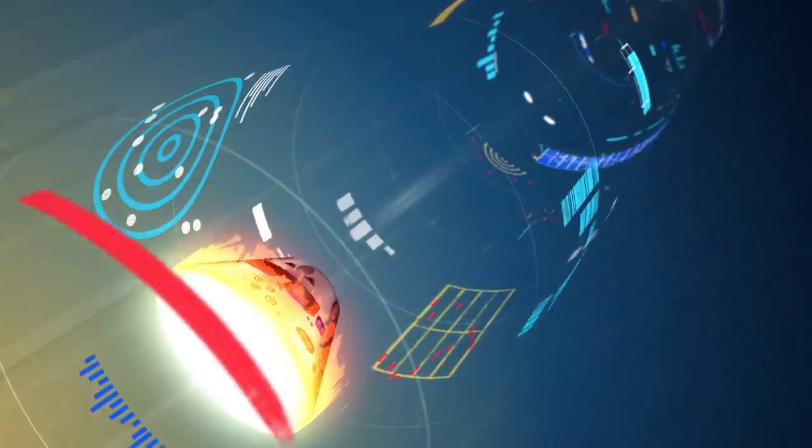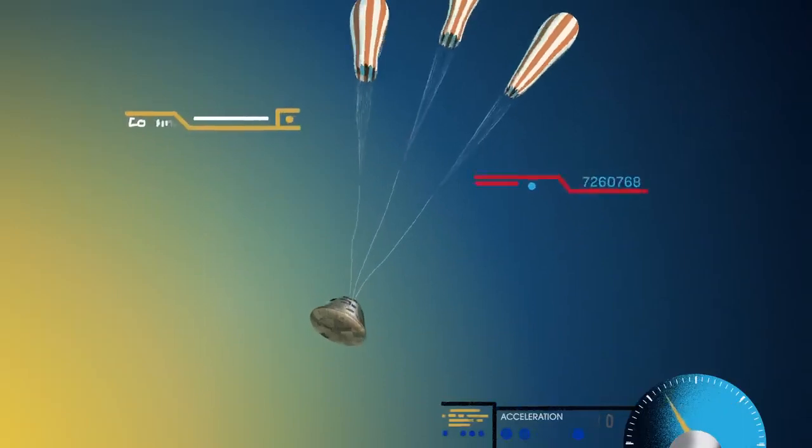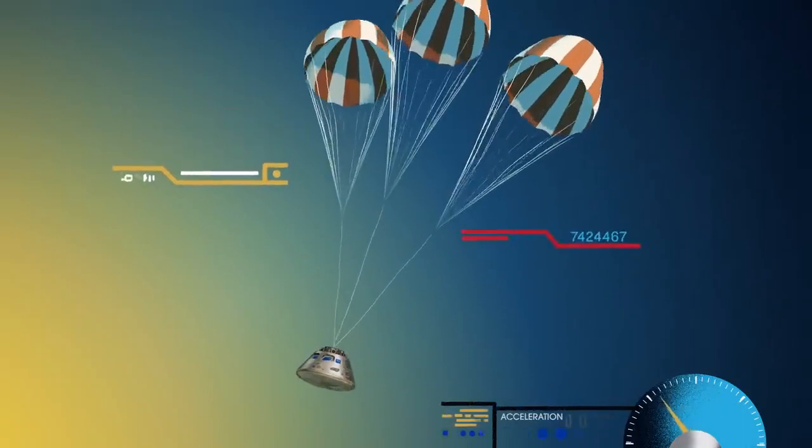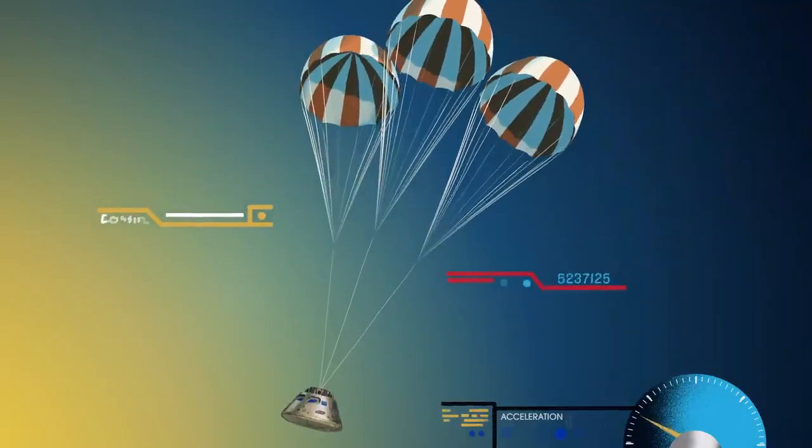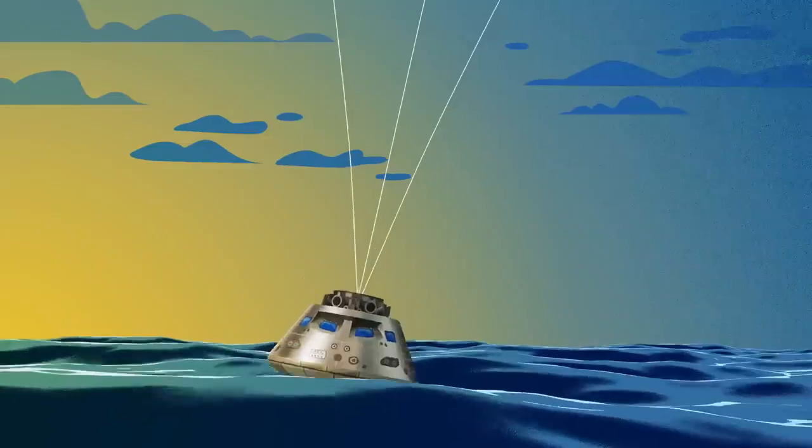With the Orion now at just 300 miles per hour, a series of parachutes uniquely tested and produced for this moment deploy, decelerating the craft to just 20 miles per hour for splashdown.